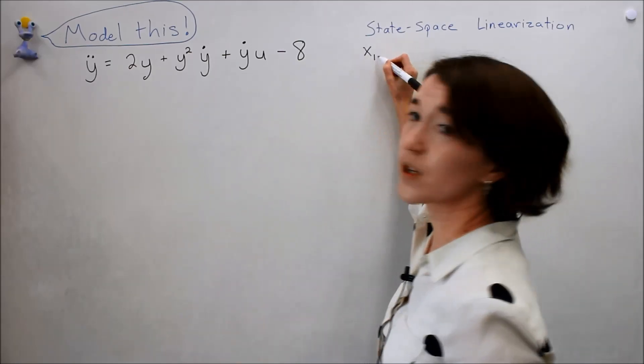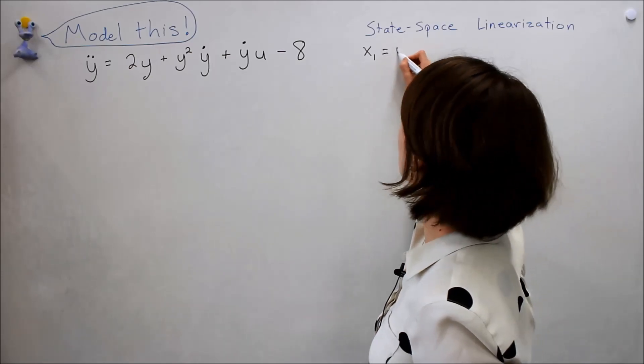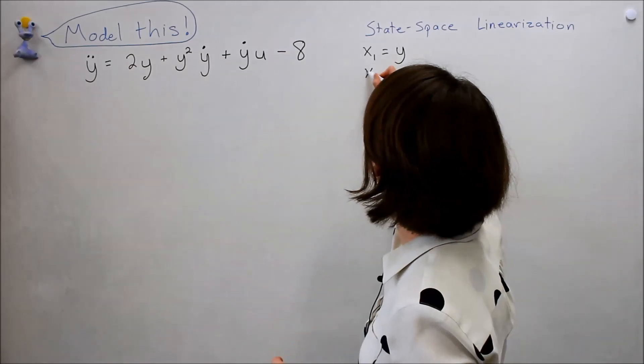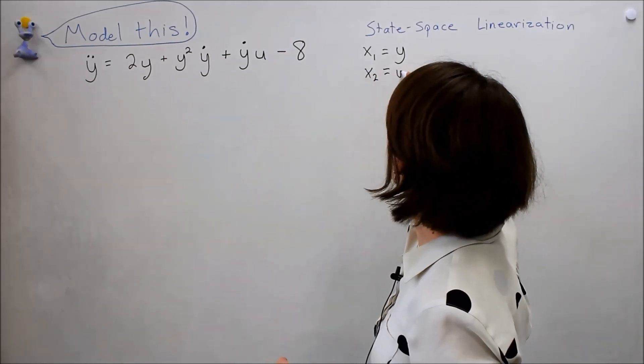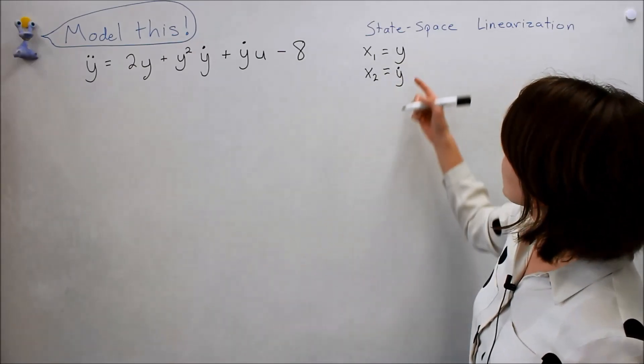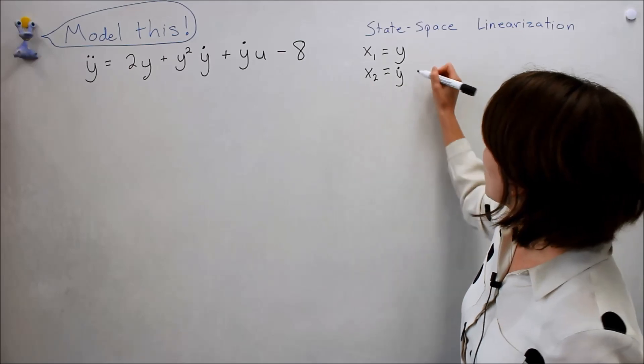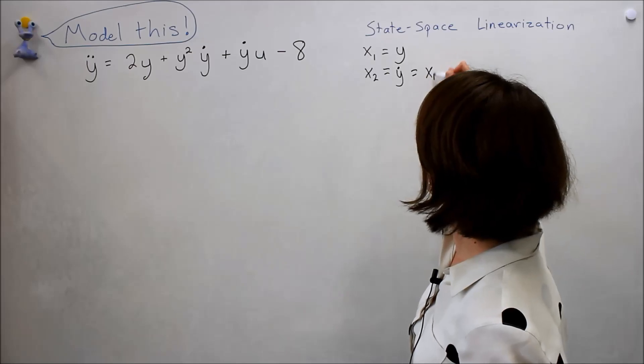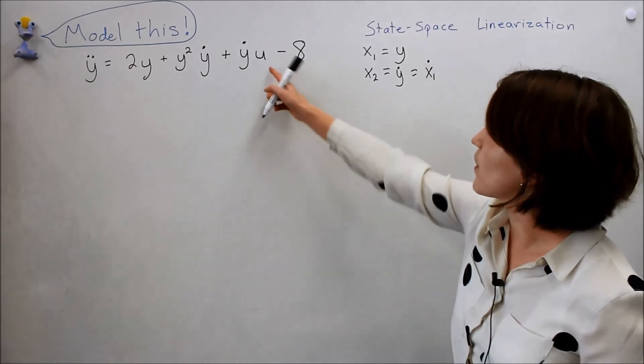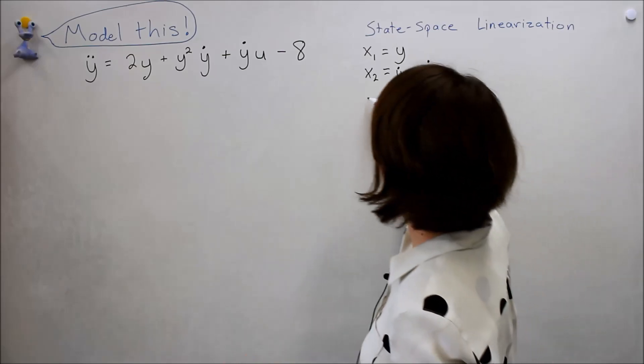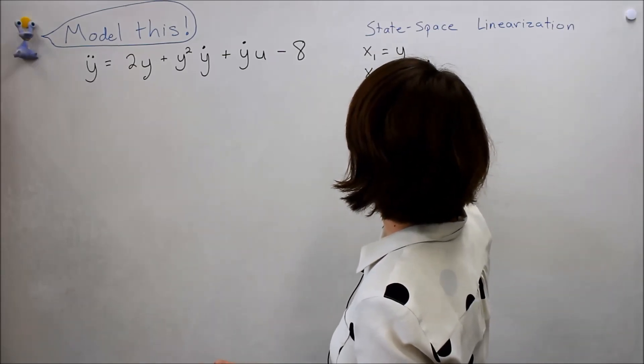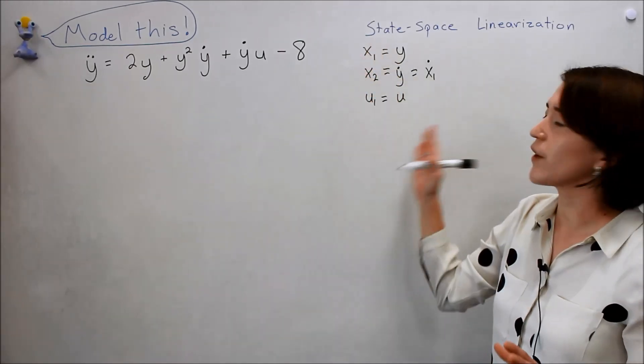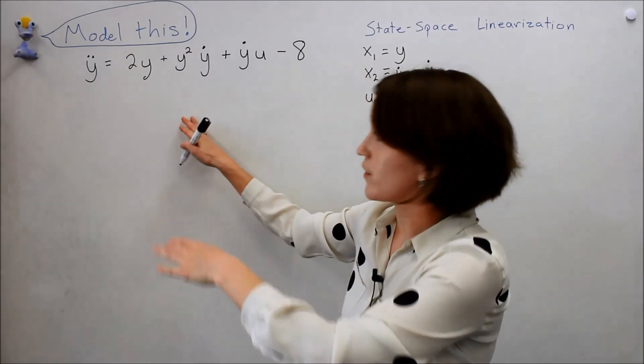We have this derivative, let's call it x2, so x2 equals y dot. Remember, x2 is also equal to x1 dot because it's the derivative here. And we have an input u, we'll call that u1.